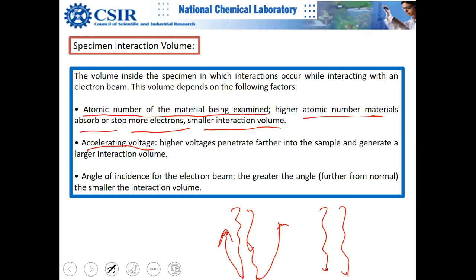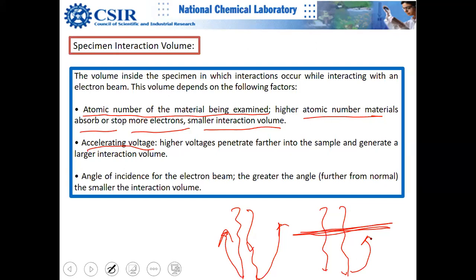High energy electrons can penetrate deeper, but secondary electrons generated deep inside may not have sufficient energy to escape the surface. The angle of incidence also matters a lot; you can easily tilt the stage in SEM to change the angle of incidence.